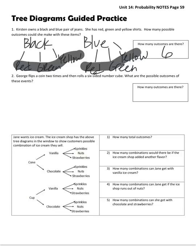George flips a coin 2 times and then rolls a 6-sided number cube. What are the possible outcomes of these events? All right, so the first flip could be heads. Or it could be tails. That's the first flip. He flips again. He could get heads again. I'll abbreviate here. Or tails. Heads or tails. Then he rolls a 6-sided number cube.